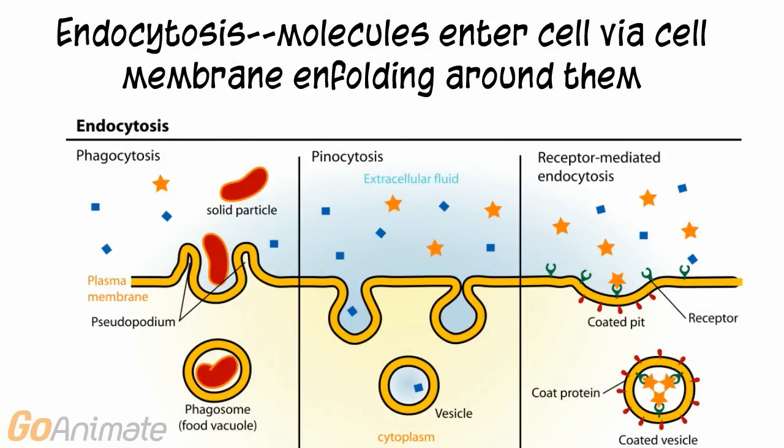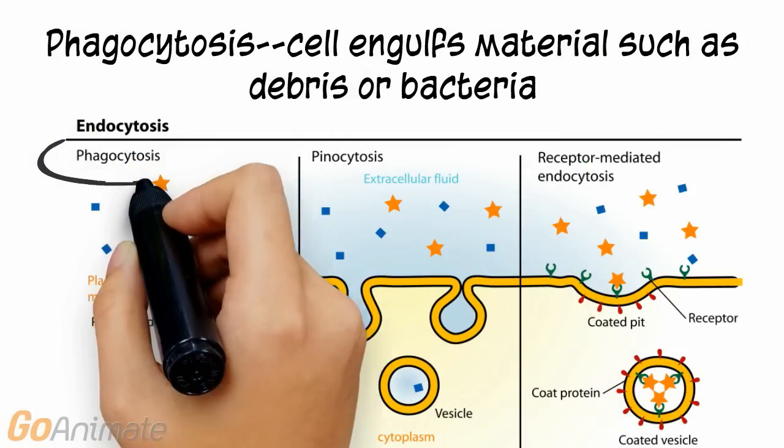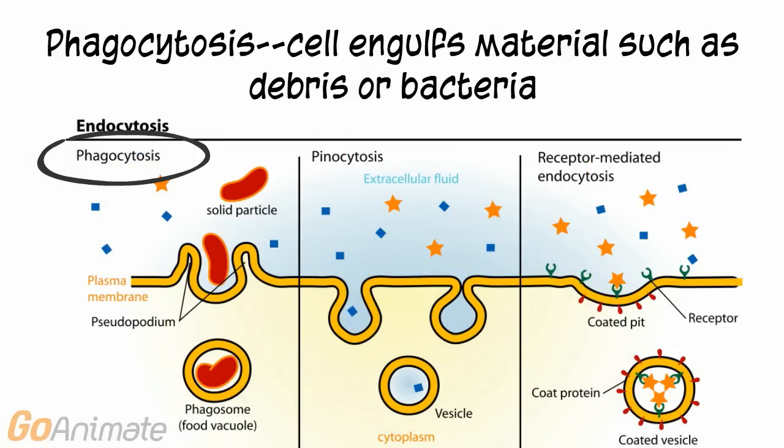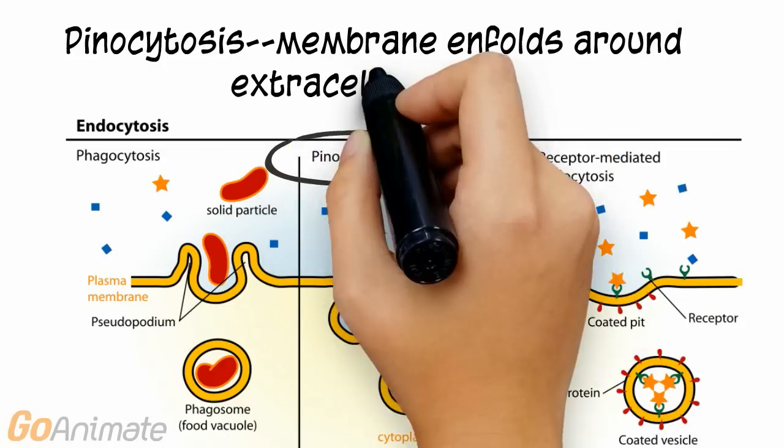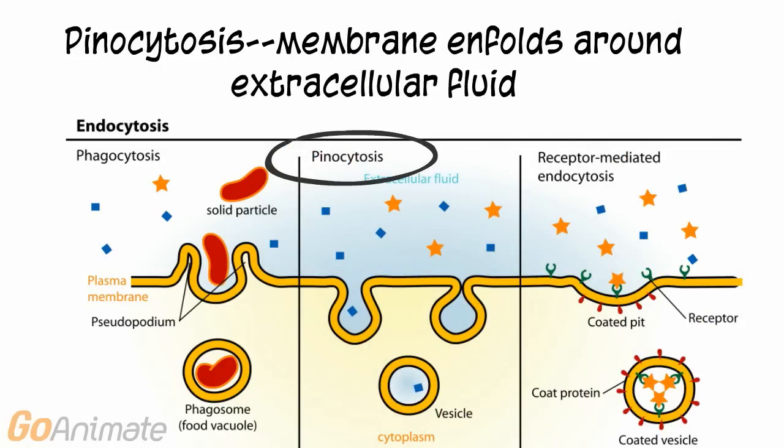In endocytosis, the cell membrane unfolds around substances to bring them into the cell. There are different kinds of endocytosis. In phagocytosis, the cell engulfs material such as debris or bacteria. In pinocytosis, the membrane unfolds around extracellular fluid to bring it into the cell.